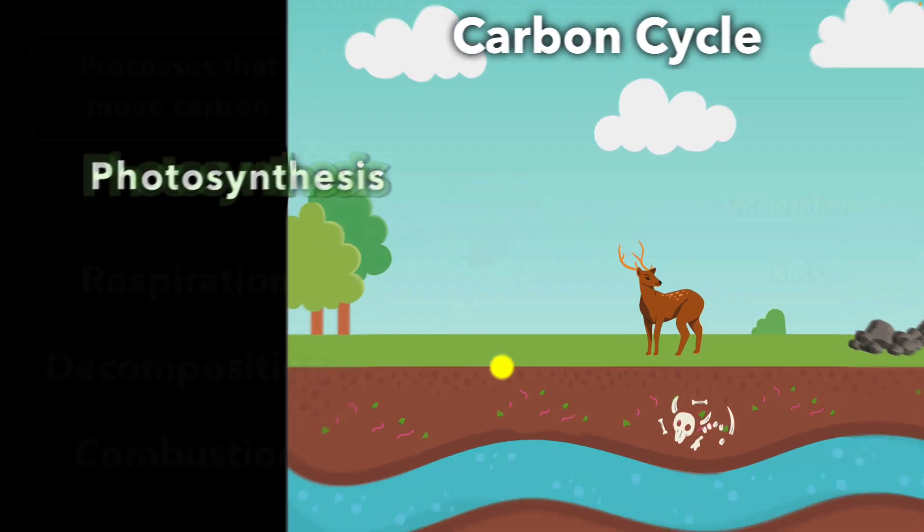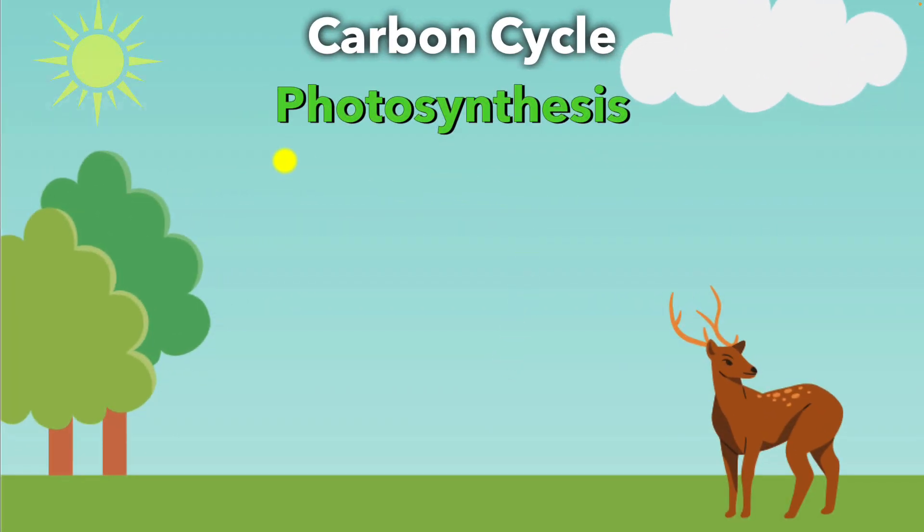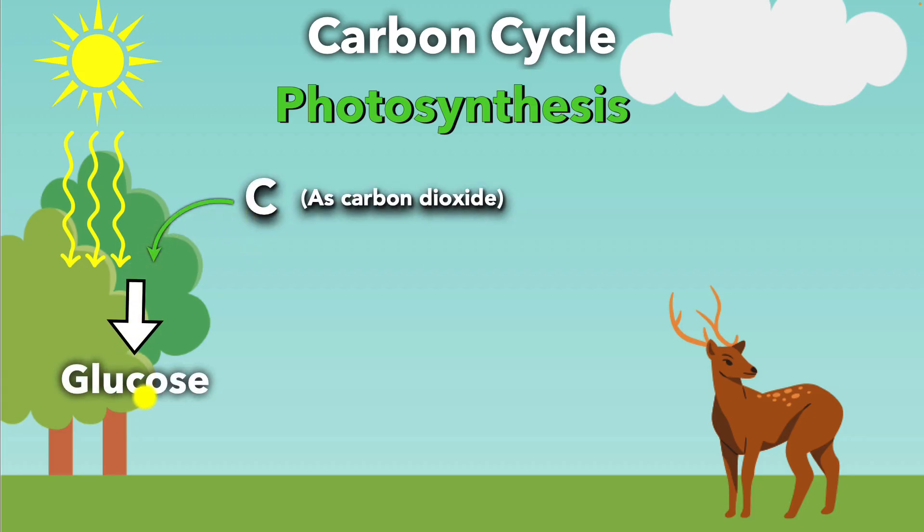Let's start with photosynthesis. Plants use sunlight to convert carbon dioxide from the atmosphere into glucose, a type of sugar. Now, processes that remove carbon from the atmosphere are called carbon sinks. So through photosynthesis, plants act as a carbon sink.